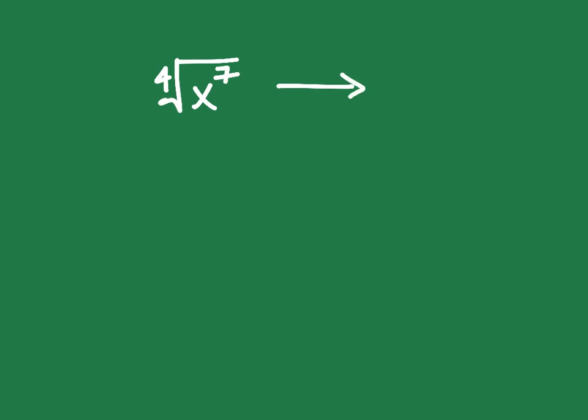The last thing I want to talk about: say you've got the fourth root of x to the seventh power and you want to rewrite that using a rational exponent. Going backwards from your rule, this is going to be x to the seven-fourths power. It's important that if you're given something in radical form, you can write it as a rational exponent, or given a rational exponent, you can write it as a radical.